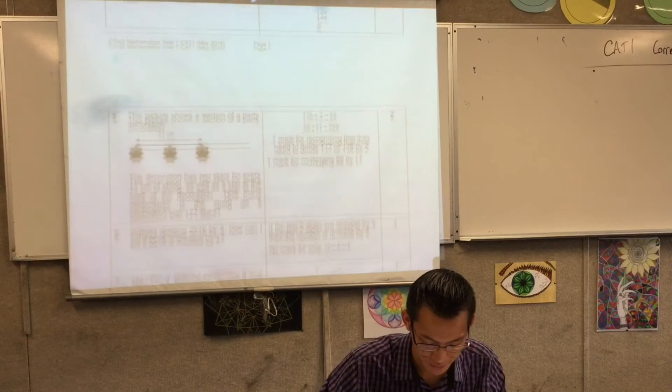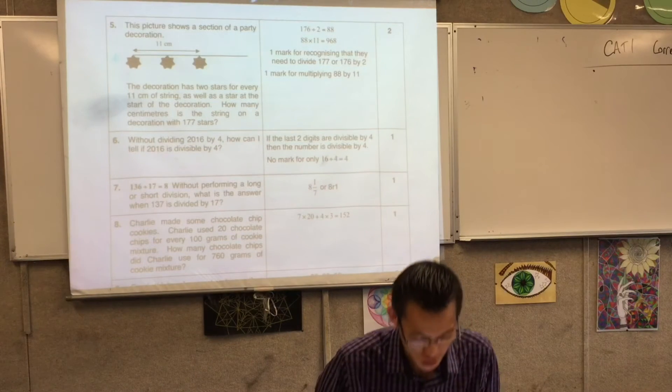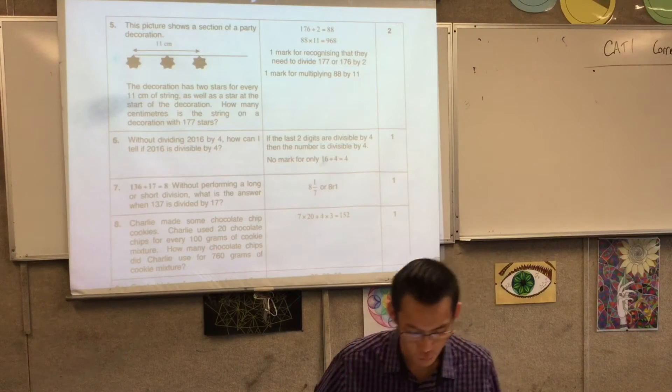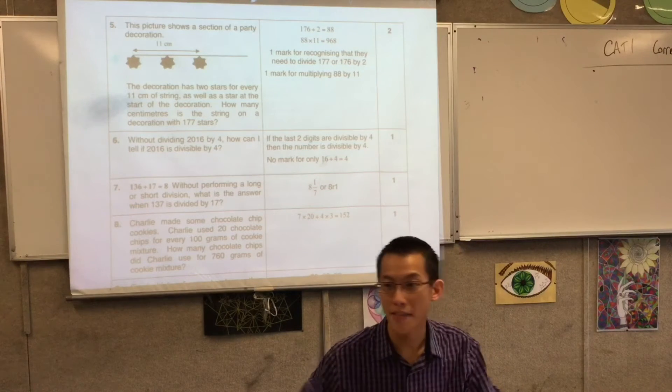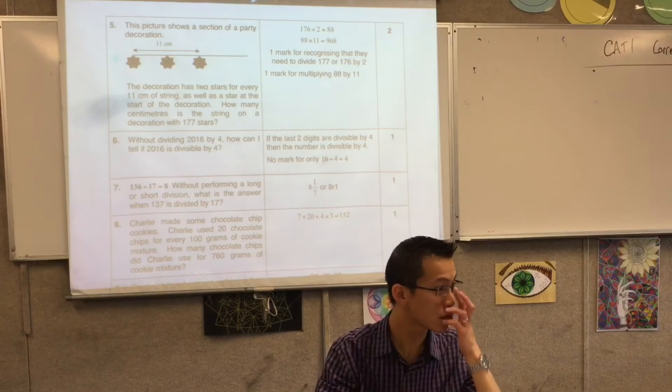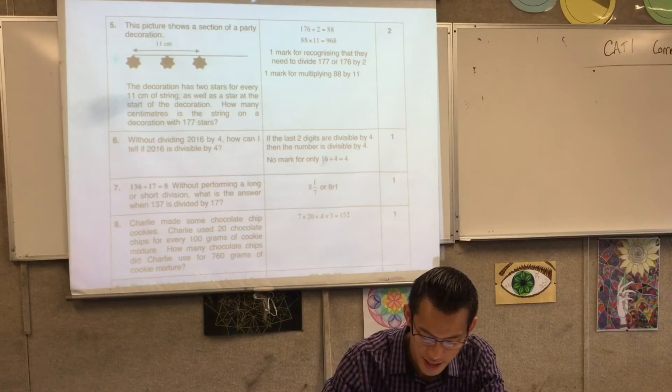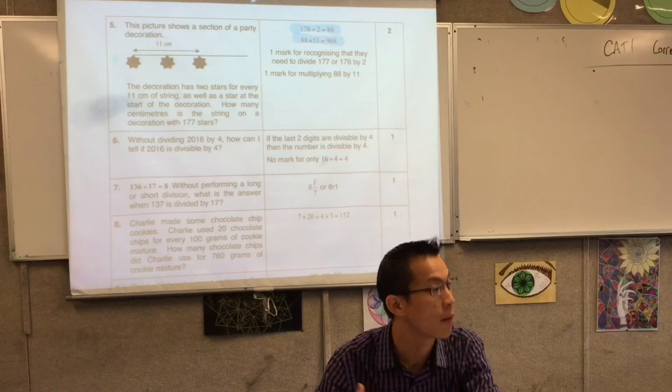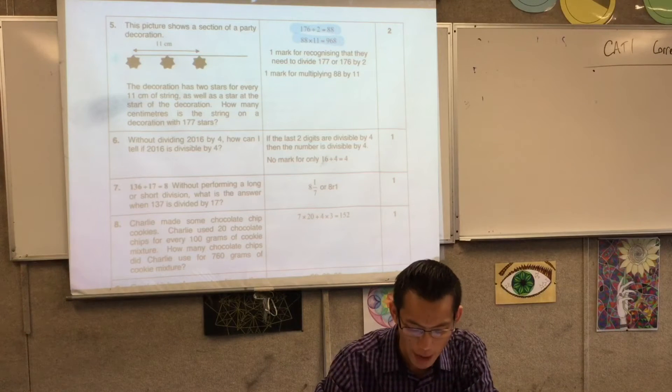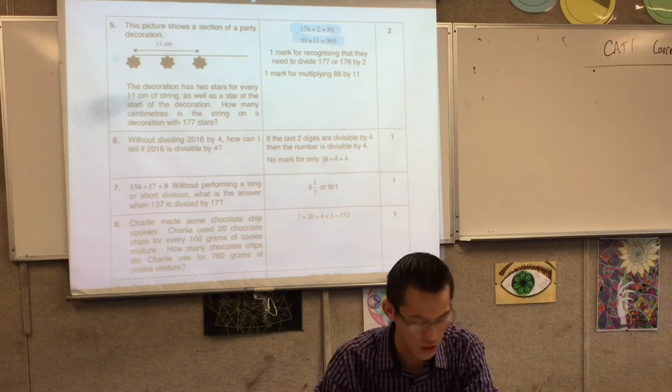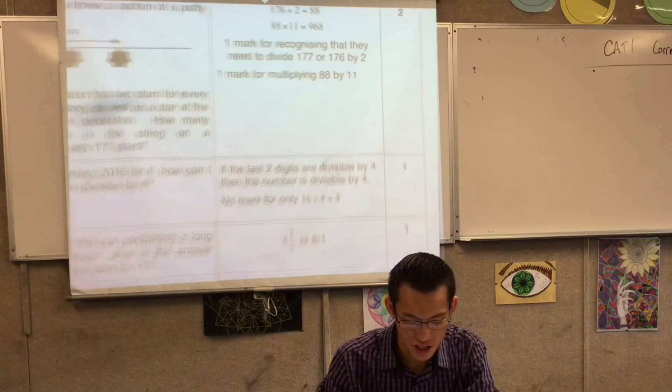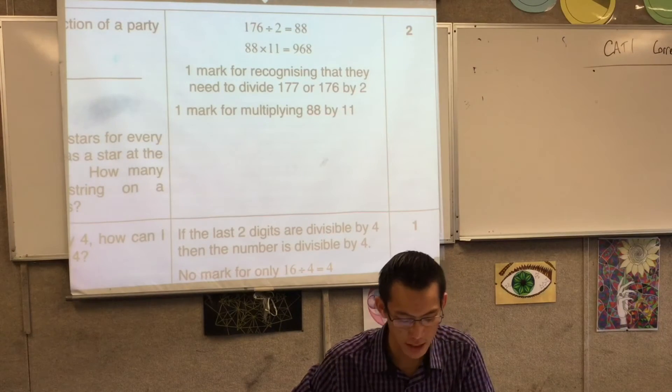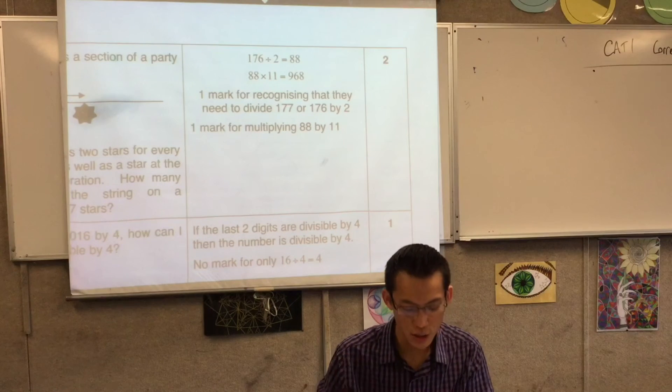So let's turn up the page. This picture shows a section of a party decoration. So what's going on? There were two marks here, and a lot of you will find there's a tick and a cross. Maybe because you demonstrated something, you had some of this kind of working somewhere, but maybe you didn't quite get the final answer, which is 968. So you can see there, and this is just to give you a general guideline.